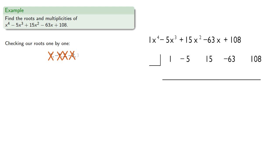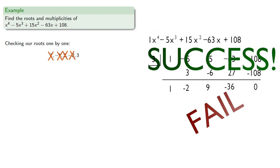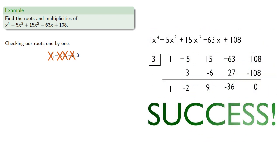We'll try 3 and get a non... wait, oh no, that worked. And so we find x equals 3 is a root. And remember, the terms of our quotient can be read off the last line of the synthetic division table. And so our quotient will be 1x cubed minus 2x squared plus 9x minus 36.